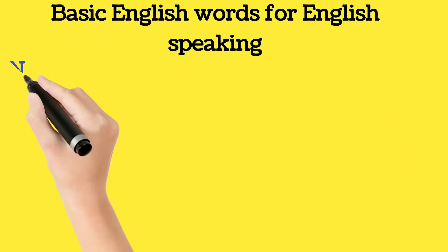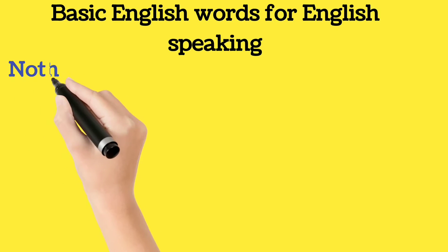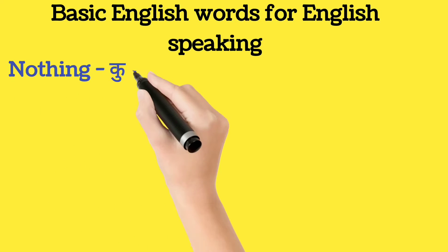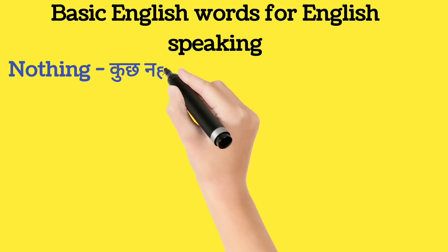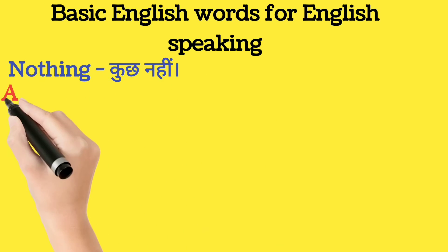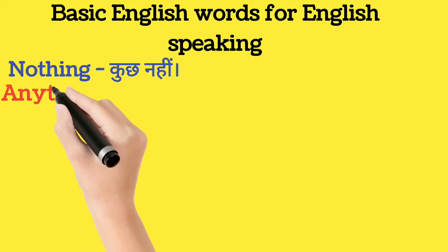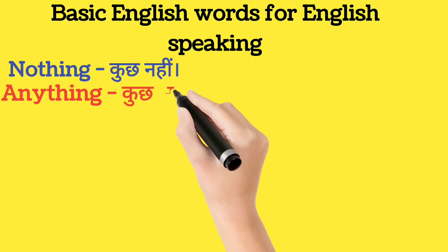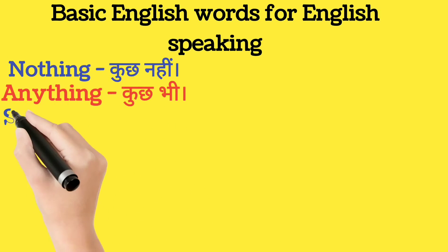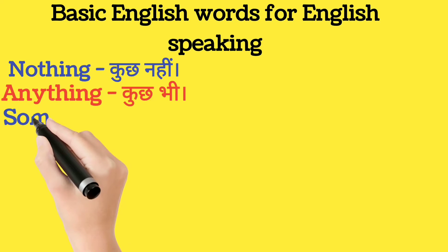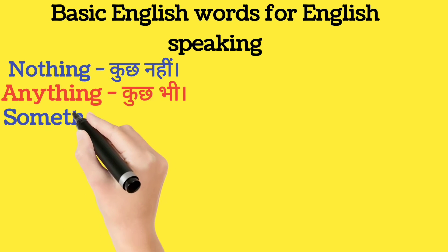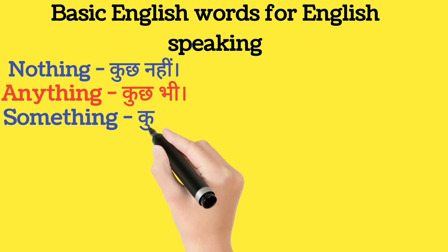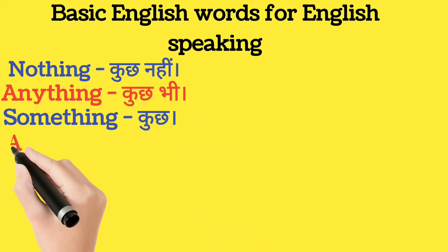Our first word is 'nothing'. Nothing ka matlab hota hai kuch nahi. Next word hai 'anything'. Anything ka matlab hota hai kuch bhi. Next word hai 'something'. Something ka matlab hua kuch.